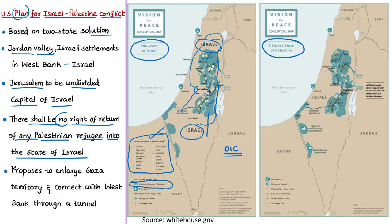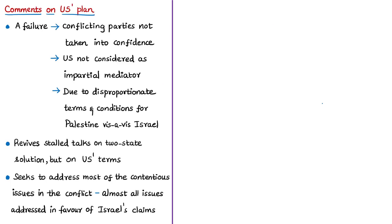While Palestine's claim over the West Bank has reduced geographically, there is a slight enlargement with respect to the Gaza Strip, and the plan proposes to connect Gaza with the West Bank through a tunnel. The author of the editorial states the plan is a failure, mainly because the conflicting parties were not taken into confidence — the plan was brought up mainly in consultation with Israel, and Palestinian Authority does not consider US President Trump as an impartial mediator.